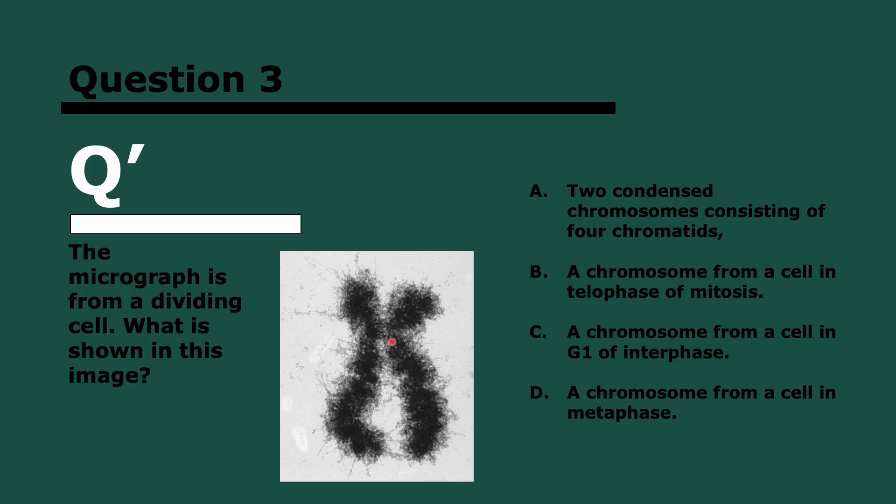Question three, and this one's the first one that's new. The micrograph is from a dividing cell. What is shown in this image? Think about this one, I think it can be a little tricky. Three, two, and one. It's D. It's not two condensed chromosomes consisting of four chromatids. Actually, it's one chromosome consisting of two chromatids. It's not from telophase in mitosis because they would be separated. It's not from G1 in interphase because that's before DNA replication. But it could be from metaphase when they're aligned in the center before they're separated to opposite poles.